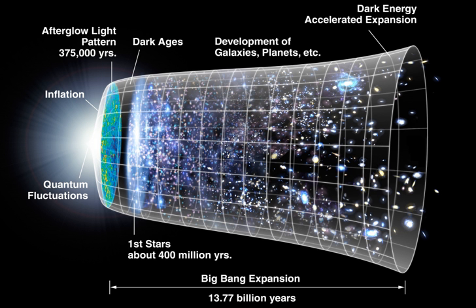In 1964, the cosmic microwave background radiation was discovered, which was crucial evidence in favor of the Big Bang model, since that theory predicted the existence of background radiation throughout the universe before it was discovered. More recently, measurements of the redshifts of supernovae indicate that the expansion of the universe is accelerating, an observation attributed to dark energy's existence. The known physical laws of nature can be used to calculate the characteristics of the universe in detail back in time to an initial state of extreme density and temperature.